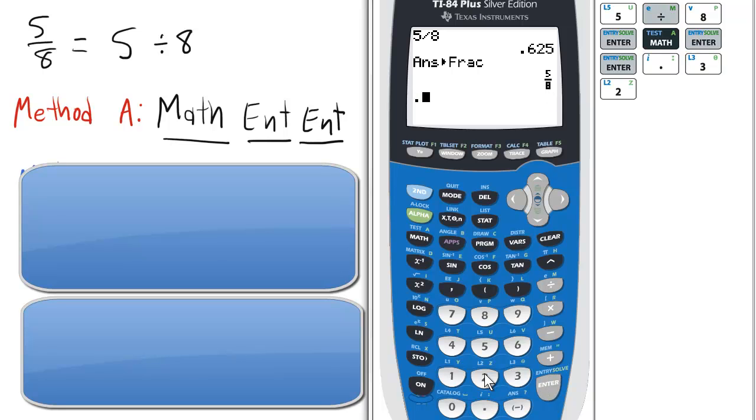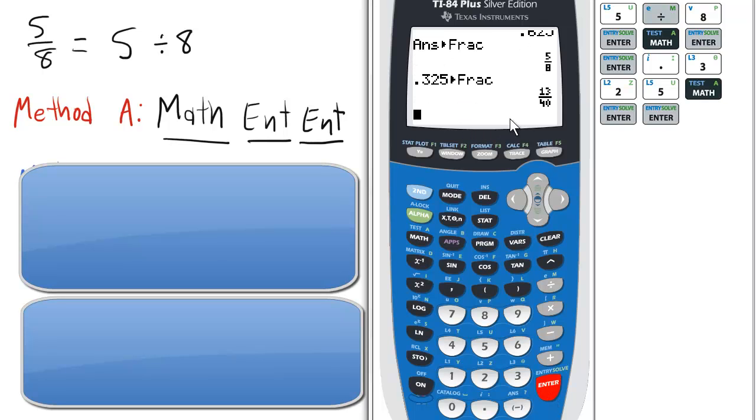So for example, if I have .325, before I press enter, I could actually press math, enter, enter, and that will convert it into a fraction.